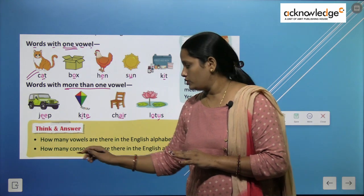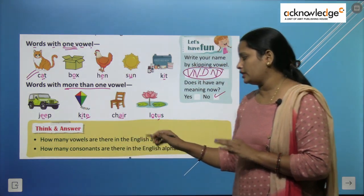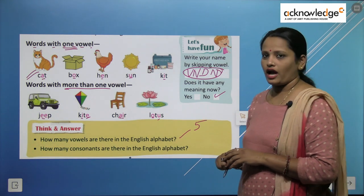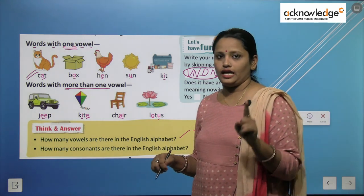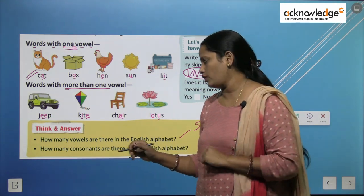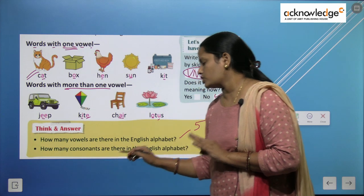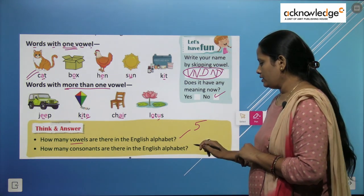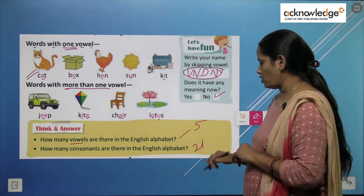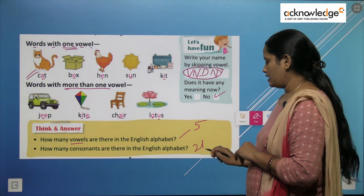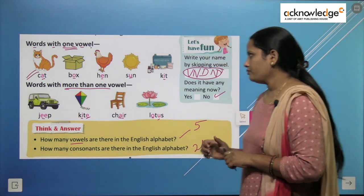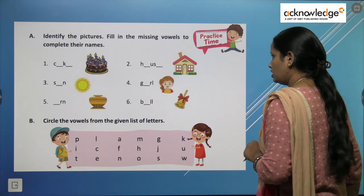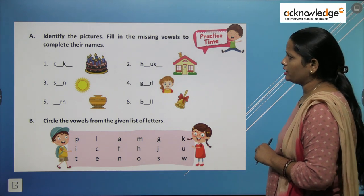Some questions for you: How many vowels are there in the English alphabet? There are total 5 vowels — A, E, I, O, U. How many consonants are there in the English alphabet? If the vowels are 5, then there are 21 consonants. I hope you have understood what vowels and consonants are. Now we are going to do another exercise.